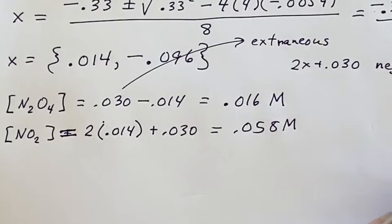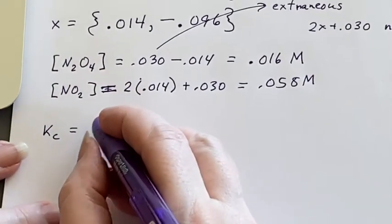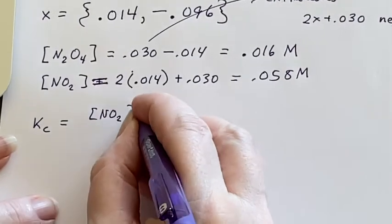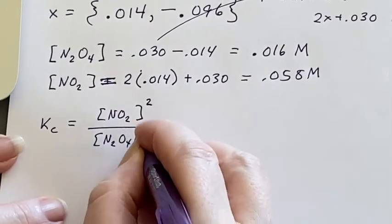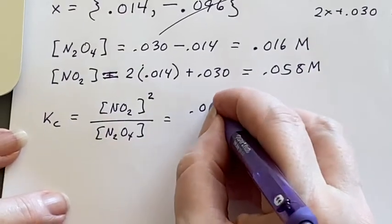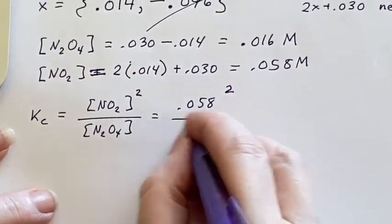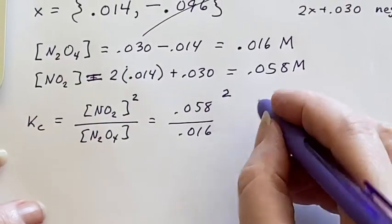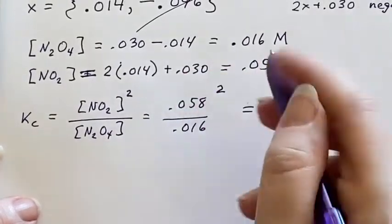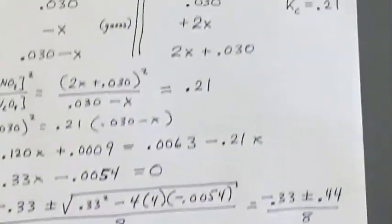And as a double check you can just run what K sub c should be because it should be the NO2 concentration squared over the N2O4 concentration. So I have the 0.058 would be squared and the 0.016 is just like that. And if you put that in your calculator and you round it off to two sig figs you get the 0.21 and you're like yes I did it all right.